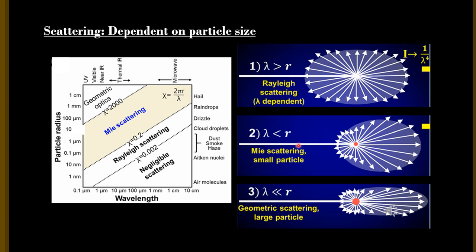However, if the particle size is comparable to that of the wavelength it is interacting with, this type of scattering is termed as Mie scattering. Mie scattering is quite anisotropic — it scatters all wavelengths of light equally, but in the forward direction compared to the back direction. And similarly, if the size of the particle is much, much larger than that of the wavelength it is interacting with, then it is termed as geometric scattering.